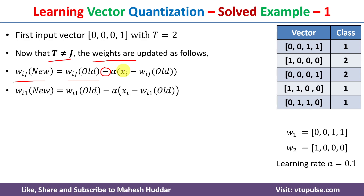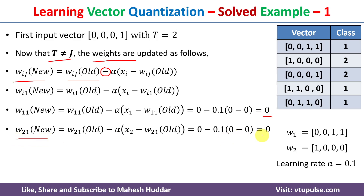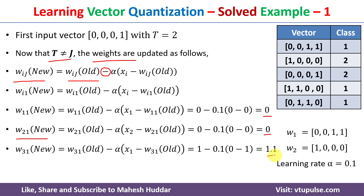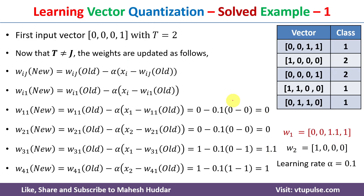Replacing j=1 and i from 1 to 4: w11(new) = 0, w21(new) = 0, w31(new) = 1.1, w41(new) = 1. The old weights for w1 are replaced with these new weights. We then continue with the next input vector.